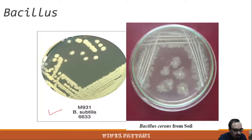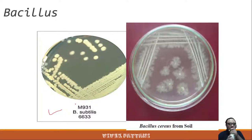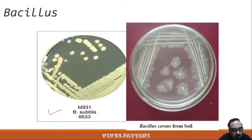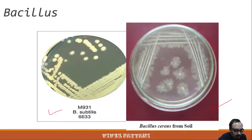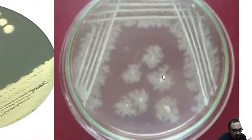Bacillus subtilis is one of the common bacteria found in routine lab work. The photograph on the right side is of Bacillus cereus, and the growth of B. cereus appears to be filamentous. A more zoomed view gives a clearer idea of the colony of Bacillus cereus.